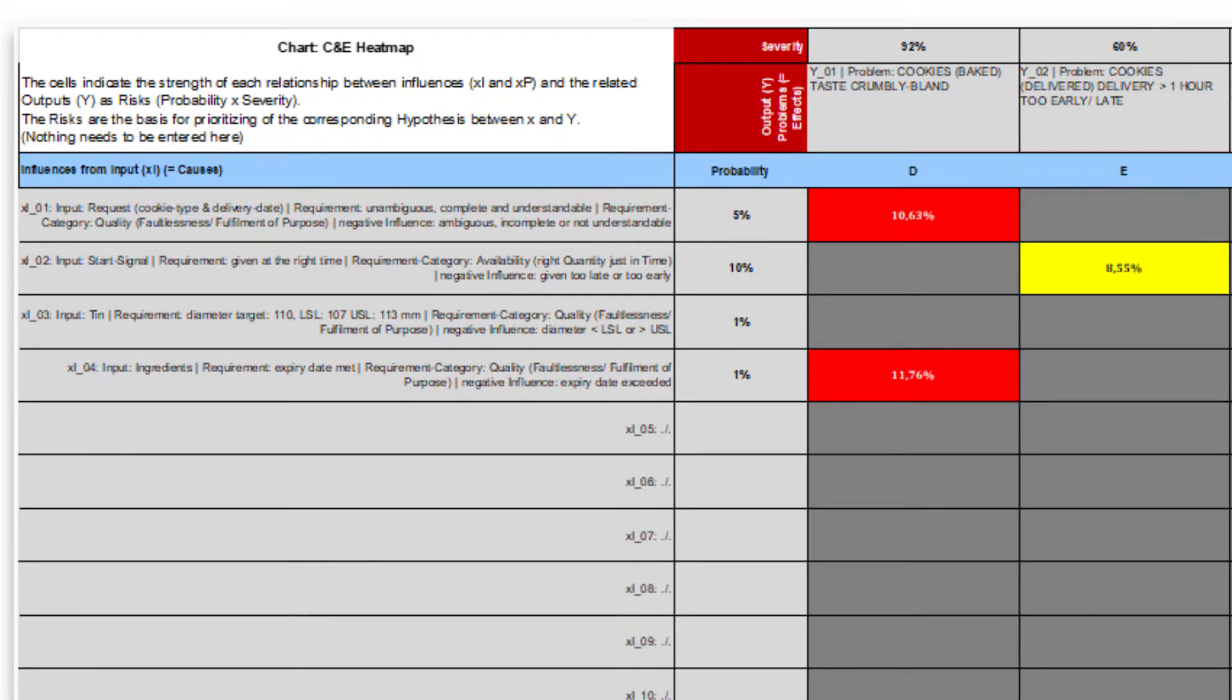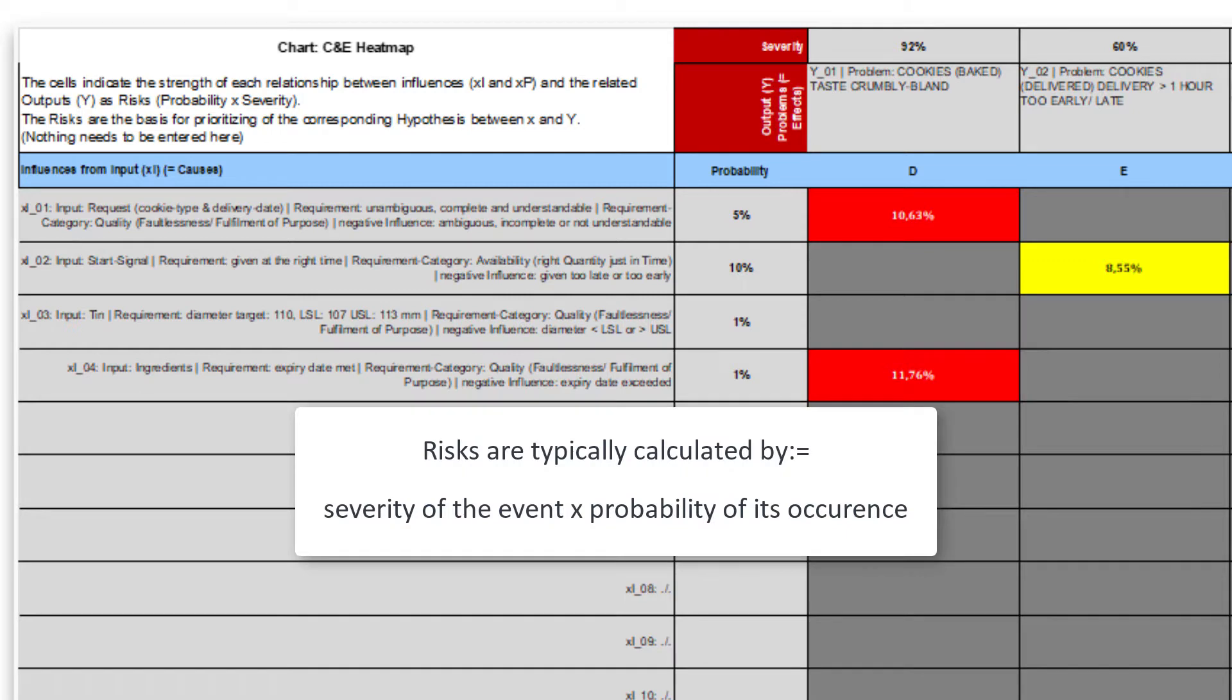It is unusual to speak of risks in the context of six sigma. But we can consider each X-Y pair as a risk, because risks are typically calculated based on the severity of an event and the probability of its occurrence.